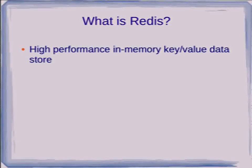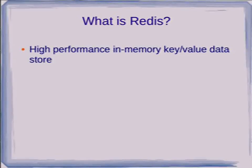Redis is a high-performance in-memory key-value data store. It will actually write to disk every so often, and how it does that is configurable. It also has some replication features which I won't be covering here. But essentially this is what it is — it's a pretty simple data store. The thing that makes it attractive for use with Postgres is that it does have some structured data types, as we'll see.